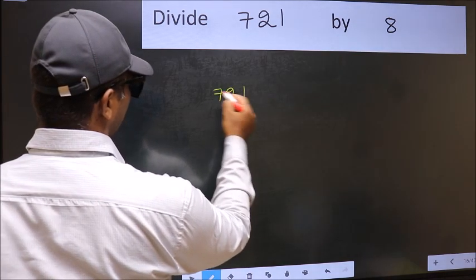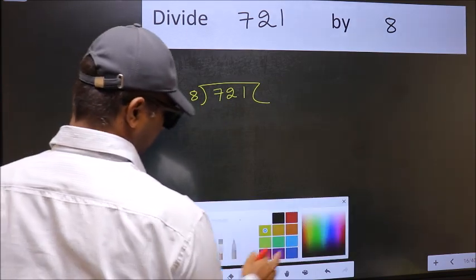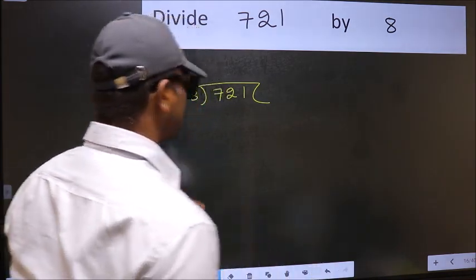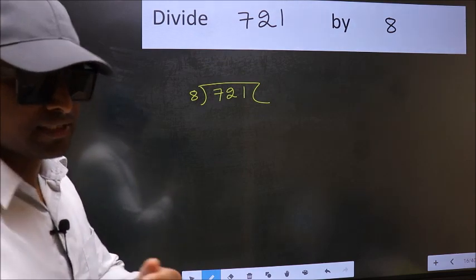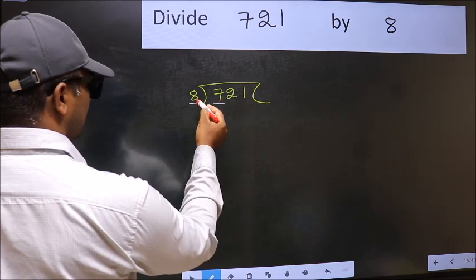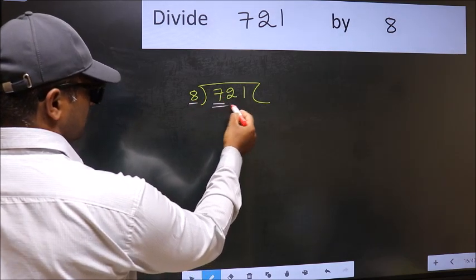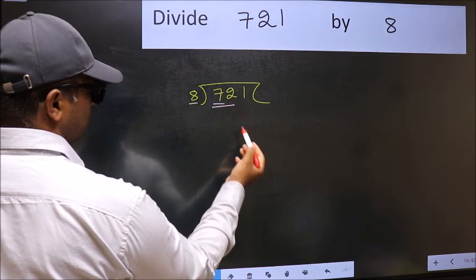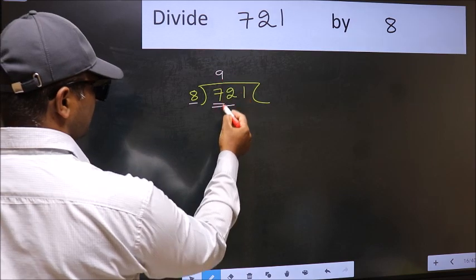721 and 8 here. This is your step 1. Next, here we have 7 and here 8. 7 is smaller than 8, so we should take two numbers, 72. When do we get 72 in 8 table? 8 nines 72.